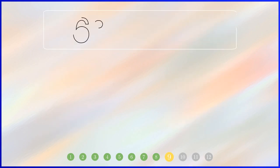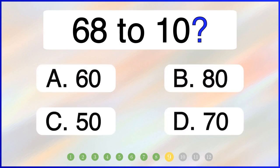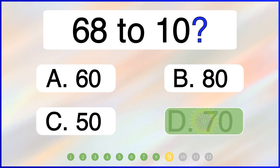What is 68 rounded to the nearest 10? The correct answer is option D: 70.